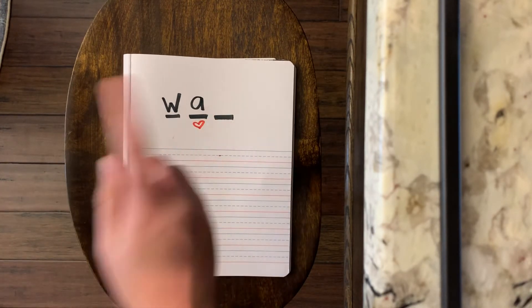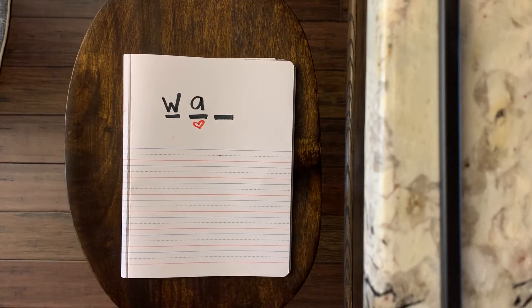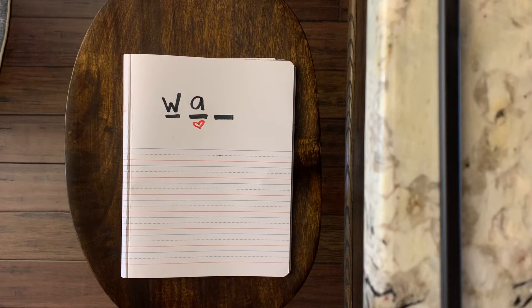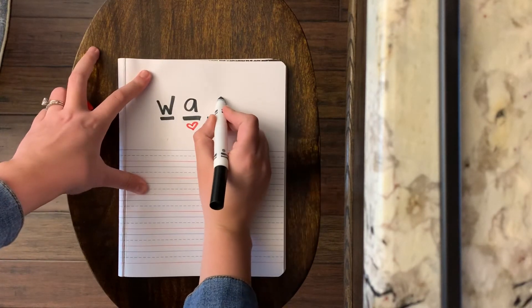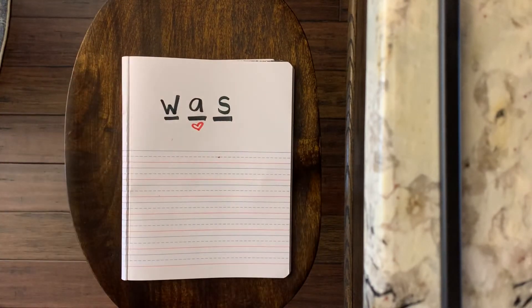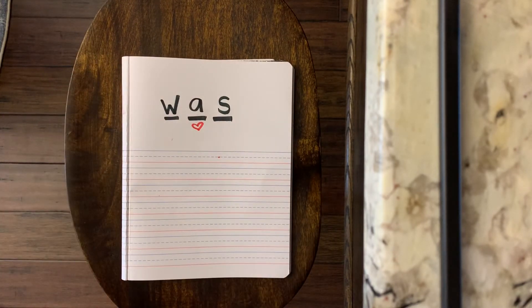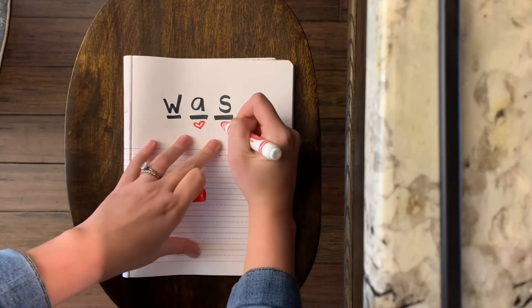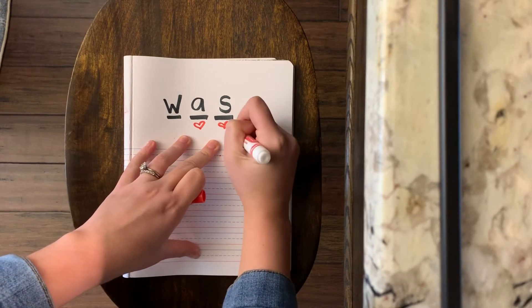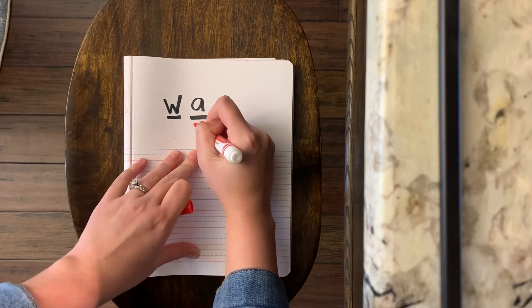W-A. Now is there a Z at the end of this word 'was'? No, it sounds like it, but in this word 'was', there's not a Z. This is another heart part. We have to know it by heart, because it is not a Z. If you said S, then you are correct. So 'was', W-A-S. I'm going to put another heart here, because it's a heart part as well.